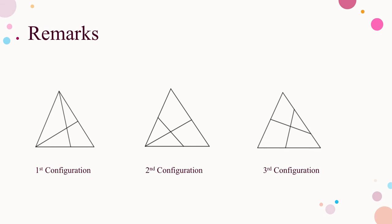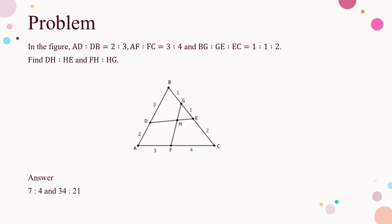So far we have explored the use of mass point on two kinds of configuration. The first configuration, discussed in video 14, has the center of mass at the intersection of two line segments both drawn from vertices. The second configuration, discussed in this video, has the center of mass at the intersection of a line segment from a vertex and another line segment with endpoints on the sides — requiring split mass. The third configuration, where both line segments have endpoints on the sides, will be discussed in the next video. You may explore the mass point calculation for the third configuration on your own first.